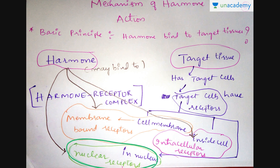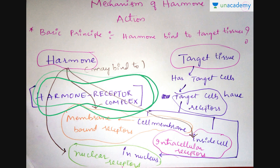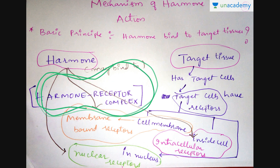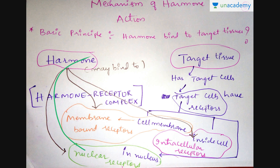What happens is that the hormone binds to the target cell receptors, forming a hormone-receptor complex. It depends on the type of tissue and the type of hormone acting. So the hormone may bind to intracellular receptors, membrane-bound receptors, or nuclear receptors, forming a complex called a hormone-receptor complex.